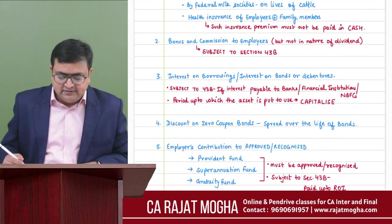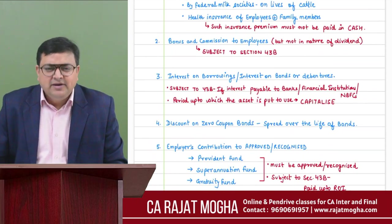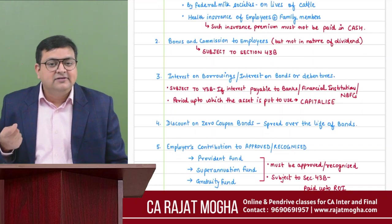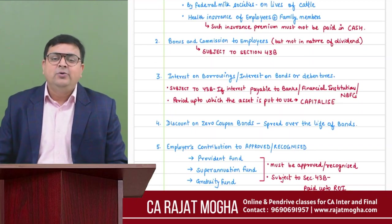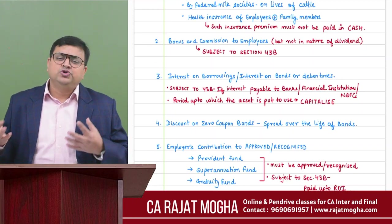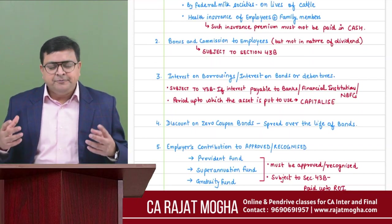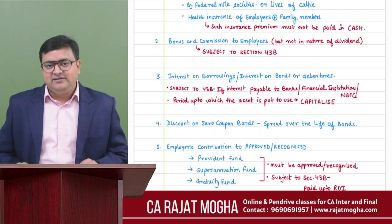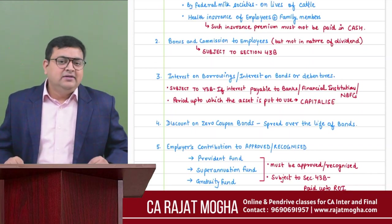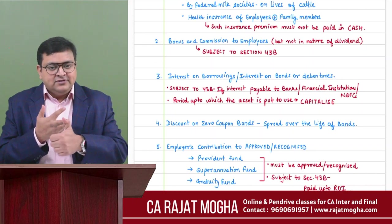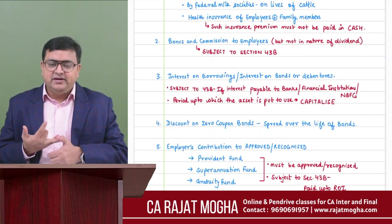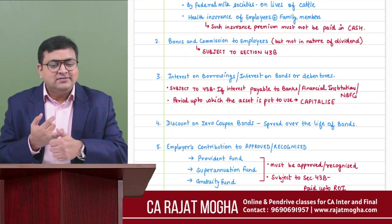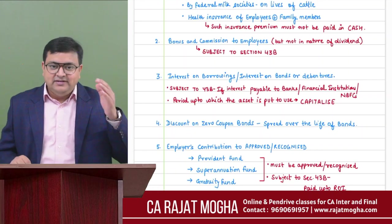Third important point in Section 36: if you have taken a loan — whether short-term, long-term, or a bank loan — and there is any interest on that loan, that interest expense is also allowed under Section 36. If the loan is taken from any bank, financial institution, or notified NBFC (non-banking financial company), it is also covered under Section 43B.